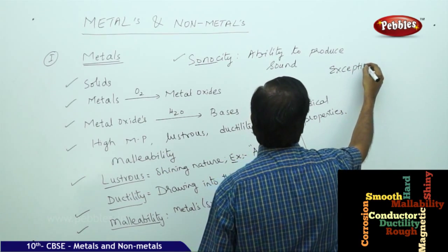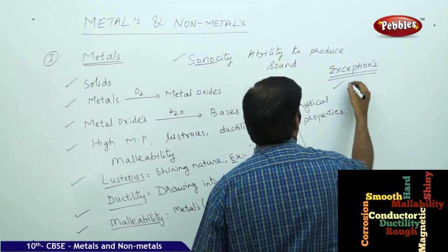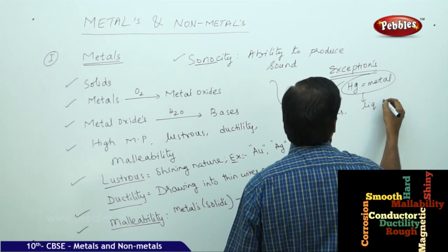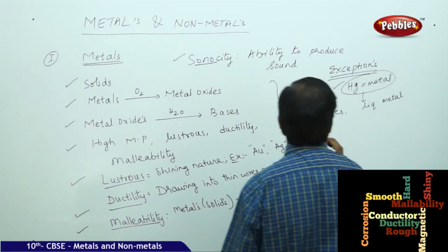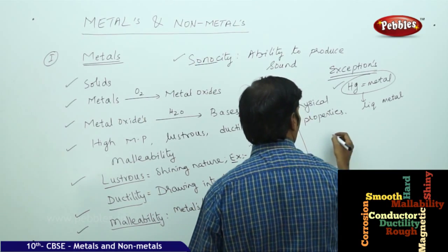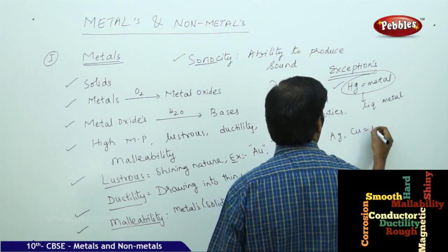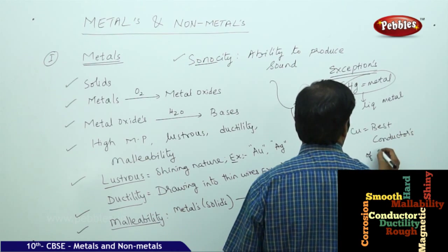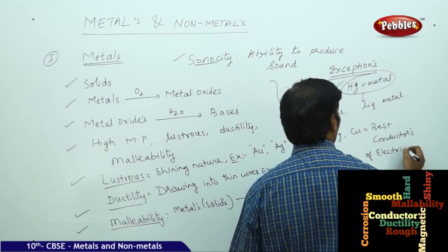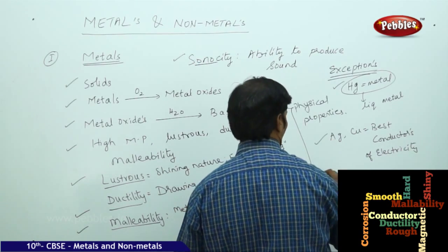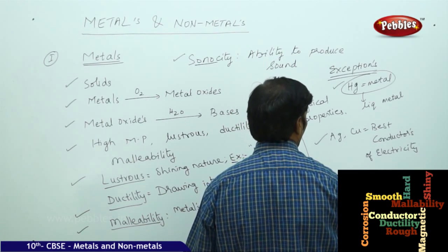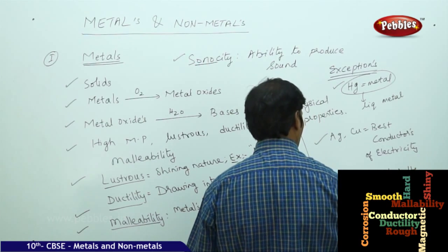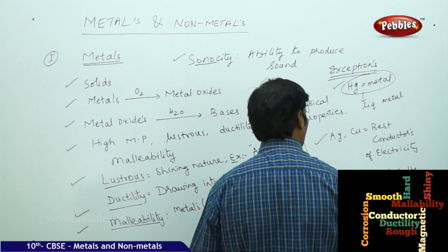Exceptions - if you take mercury, it is a metal but it's always called a liquid metal. Also, if you take silver and copper, they are the best conductors of electricity. All metals and metal salts are good electrolytic conductors only in molten state.